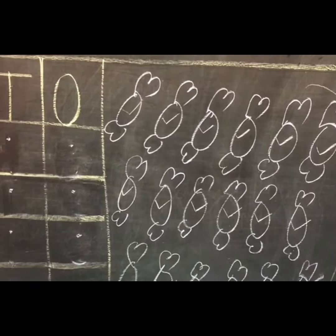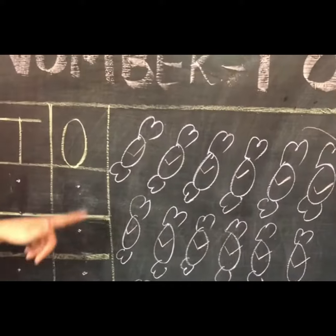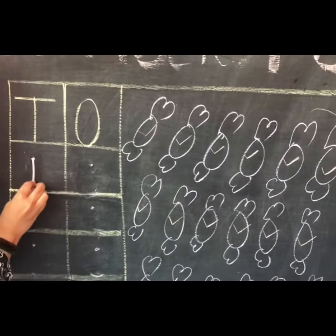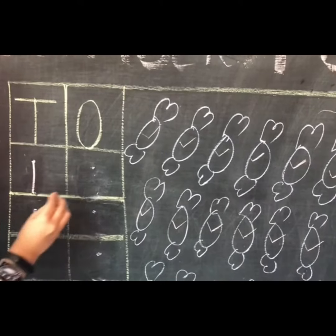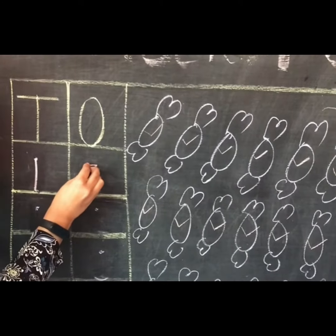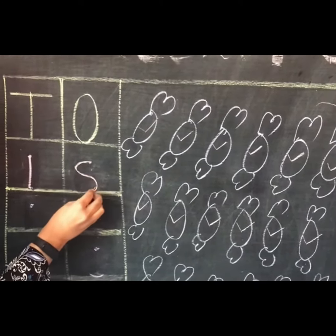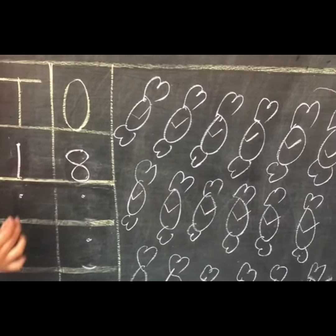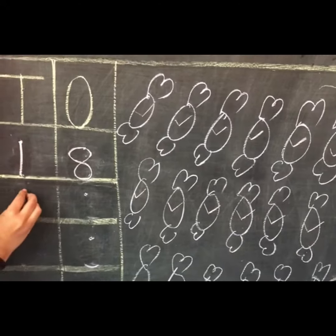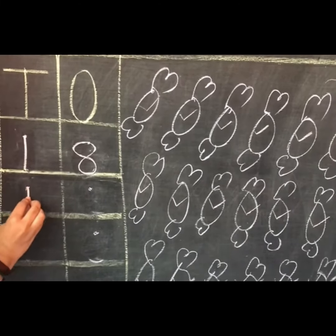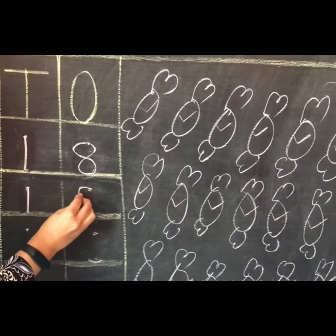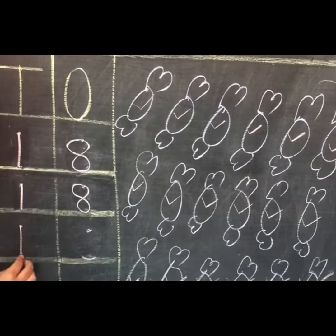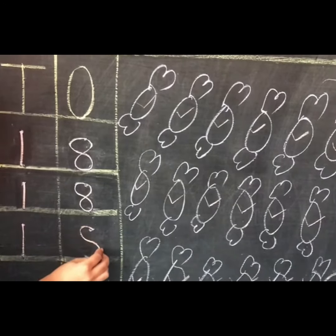Now kids, let's learn how to make number 18. First we will write 1, okay? And then number 8. How to write number 8? Like this. 1 and 8 makes number 18. Good. 1 and 8.